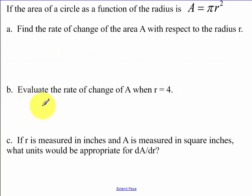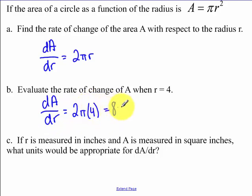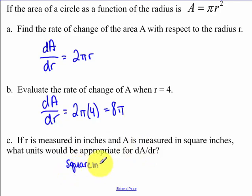Find the rate of change of area with respect to the radius — so I'm looking for dA/dr, which is our derivative. I'm evaluating the rate of change when r equals 4, so I plug in 4 and get 8π. If r is measured in inches and A in square inches, the units for dA/dr are square inches over inches.